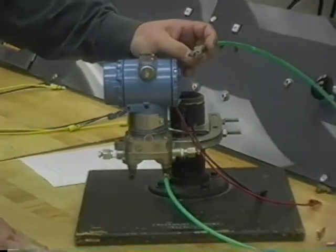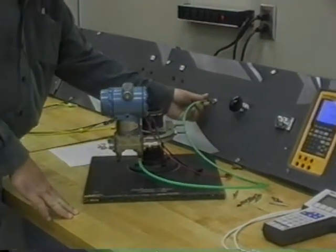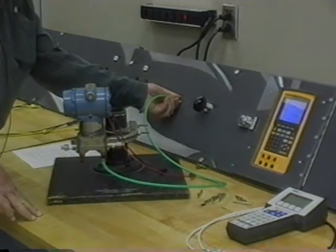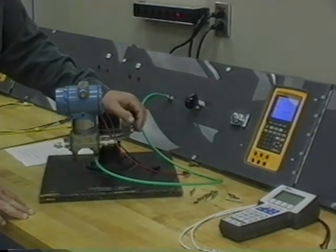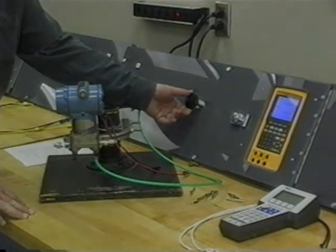Once that's connected, we can plug that into a regulated air source. We're going to be controlling the amount of air into the transmitter, the pressure into the transmitter, with a high precision regulator.